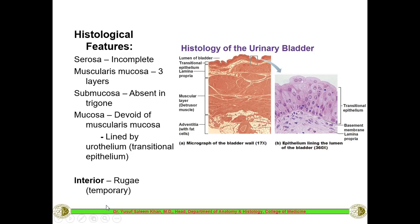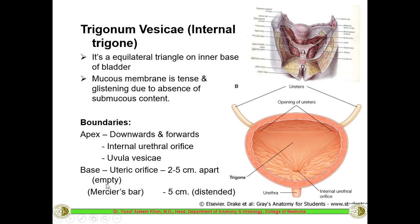On the interior features: when you see the bladder from inside, you can see rugae - folds similar to those in the stomach. Looking at the cut bladder from inside, the trigone is visible between the two ureteric openings and the urethra. These rugae are temporary folds which will disappear once the bladder is full.